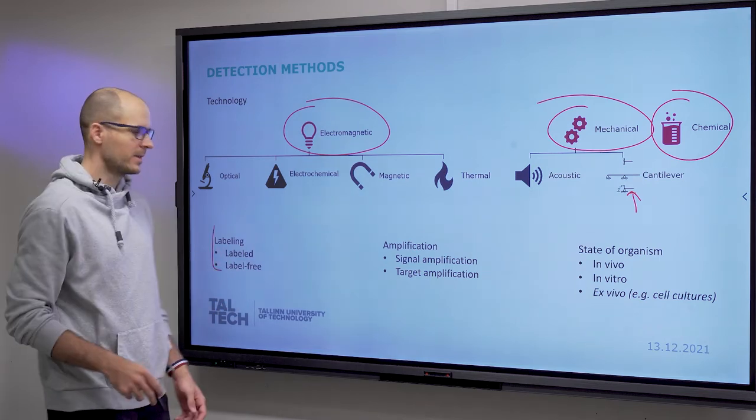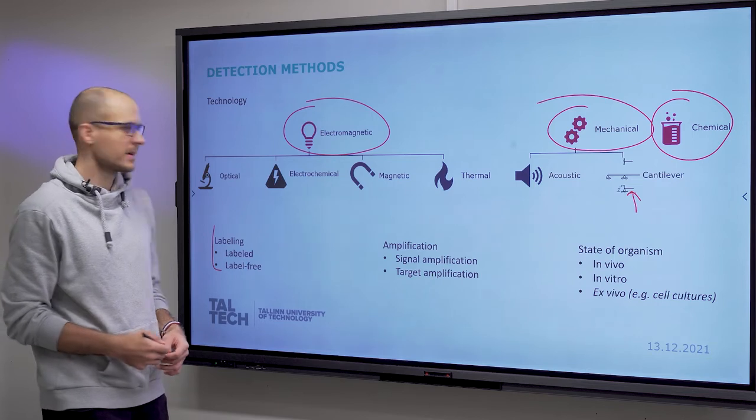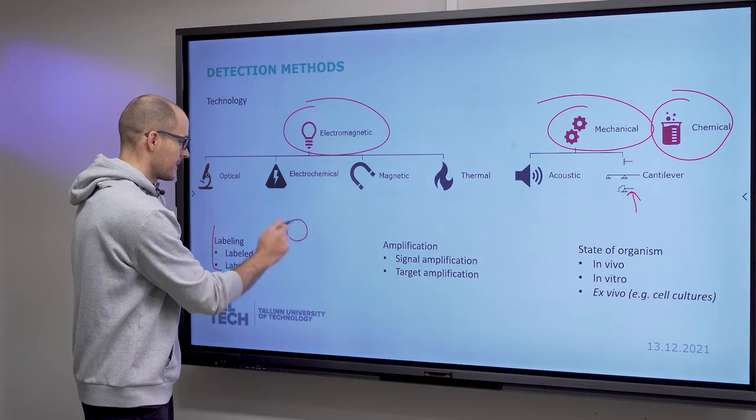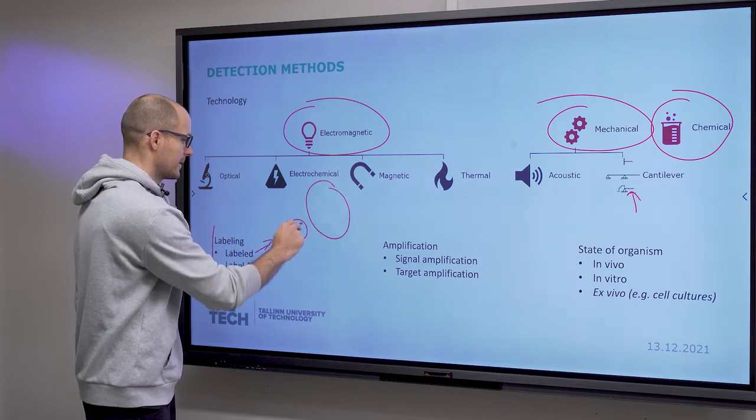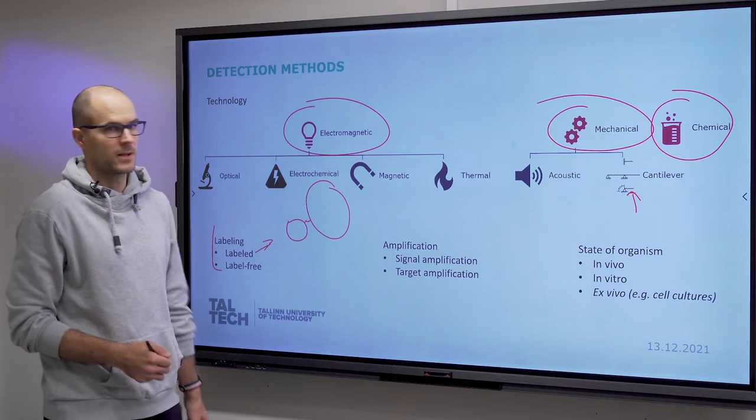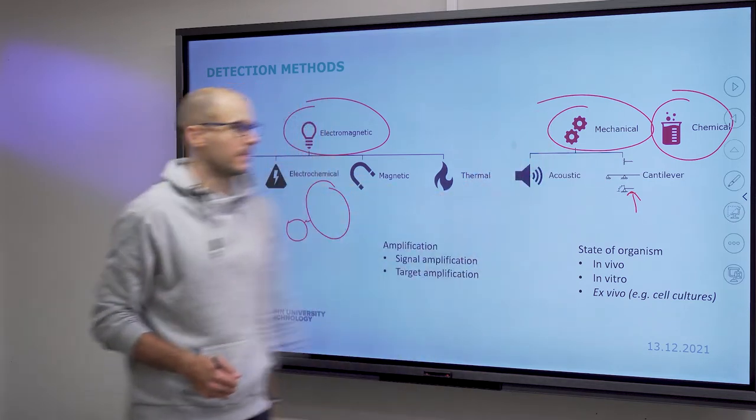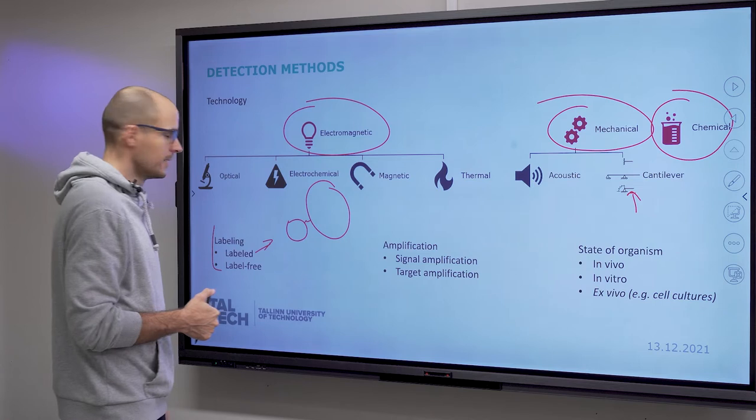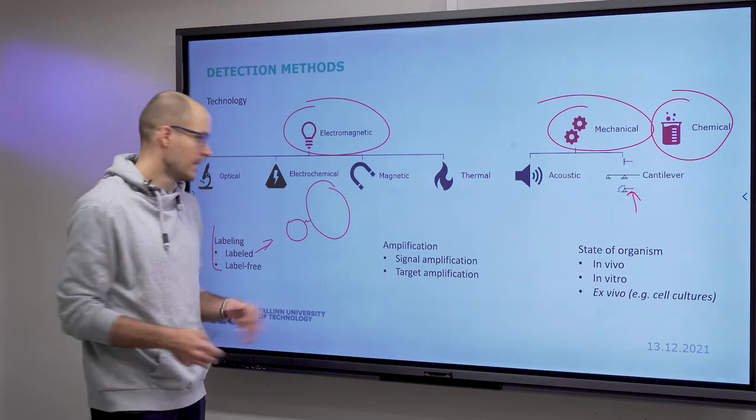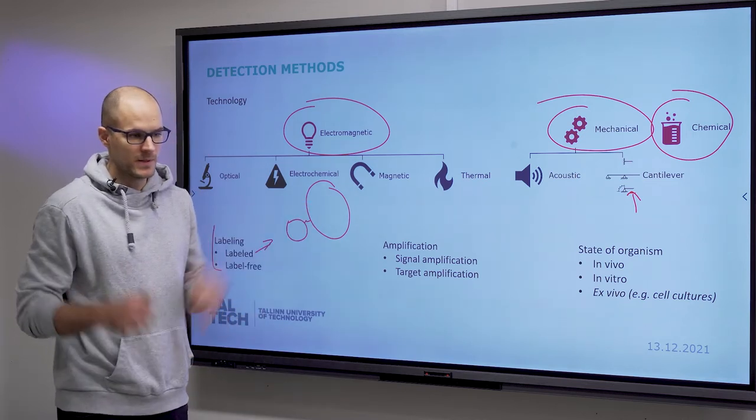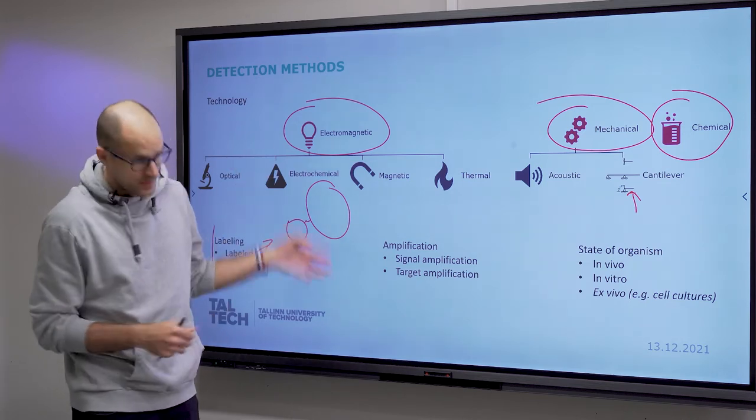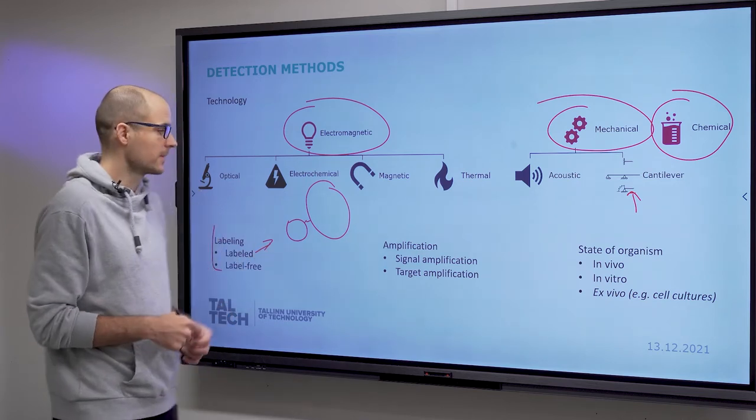Based on whether the sample is labeled or not, we can have labeled and label-free samples. In the case of a labeled sample, you have the target molecule, and onto this you need to bind a signal molecule of some sort: fluorescent marker, or something with a high molecular weight that a cantilever type sensor can pick up, or a magnetic particle. That's labeling, where there's a specific binding between the label and the target, and you amplify the target. You can also amplify the signal to get a good readout, or you do both.